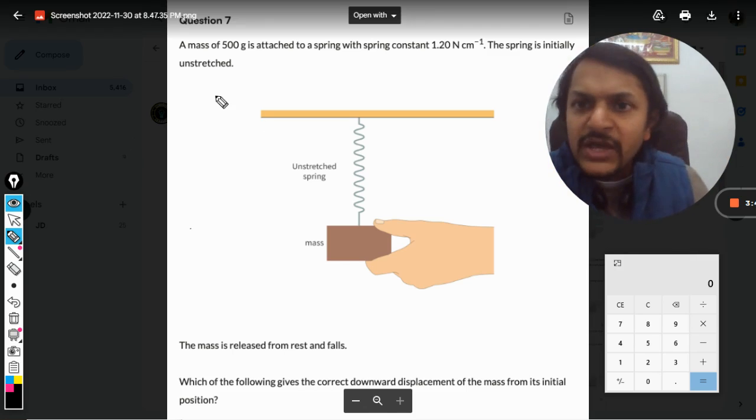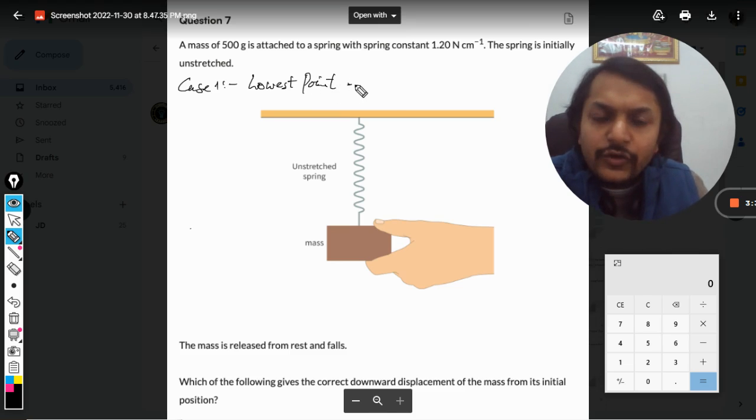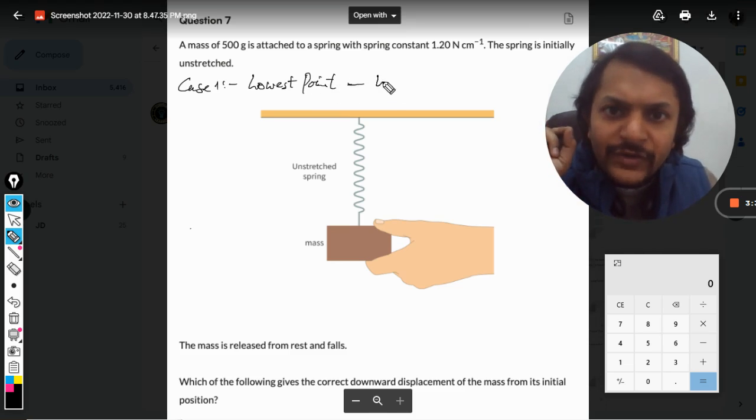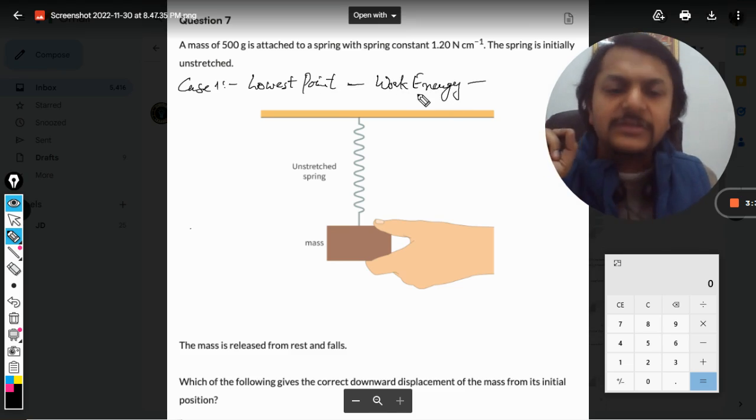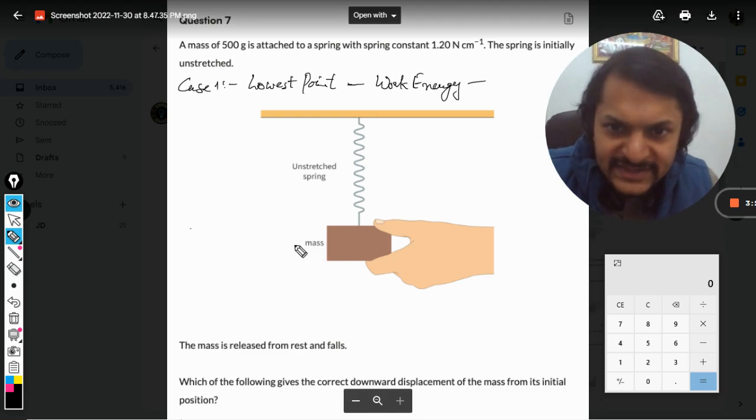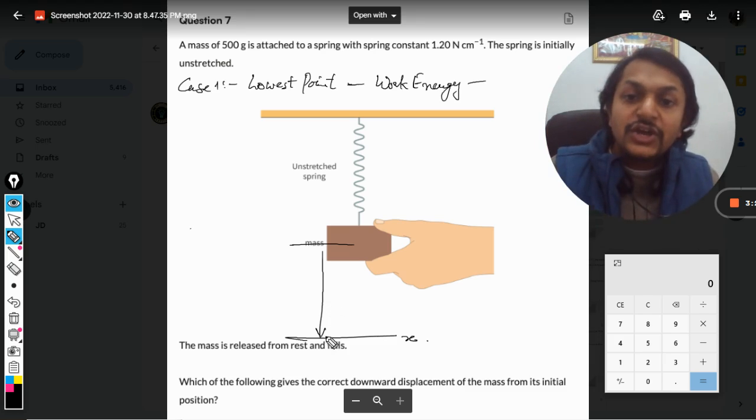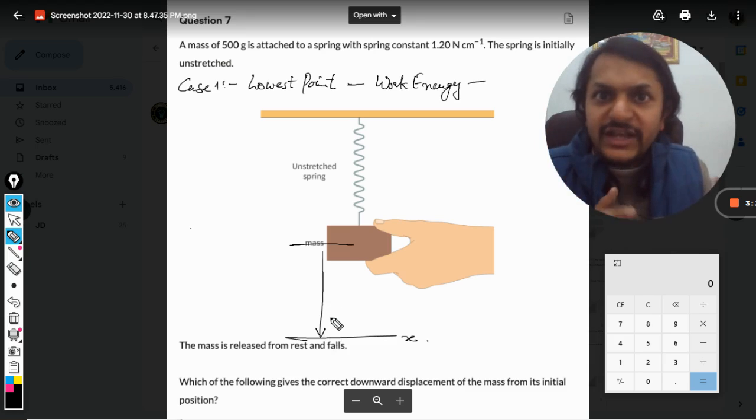Case number one: to find the lowest point, we have to go with the principle of conservation of energy. So let us say this mass goes down, and this is the deepest point, that is x. It moves by distance x, so it has lost potential energy. But where is this potential energy now? Is the mass moving? The answer is no.